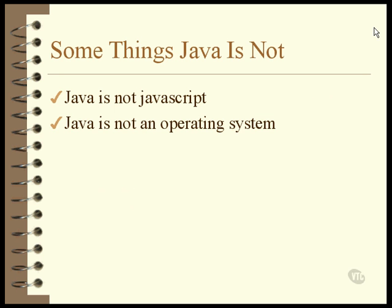Java is not an operating system. It does run inside a Java virtual machine, which is nothing more than a program that runs like any other program. We'll be talking about the virtual machine later. There was some talk at one time about an operating system that would run Java in its native mode, but nothing ever came of it. It's possible to do, but it's never been done.